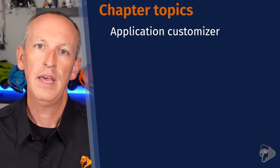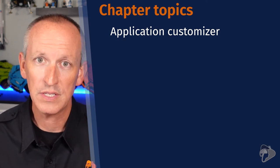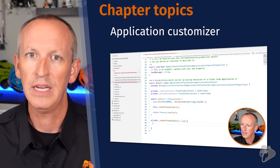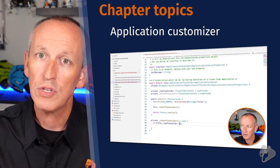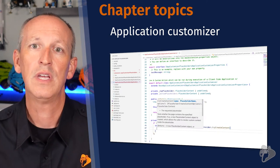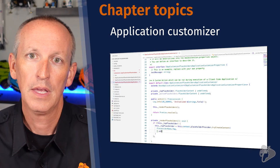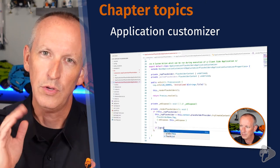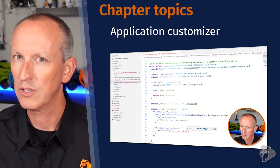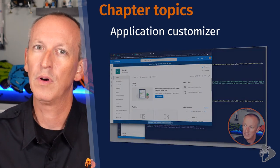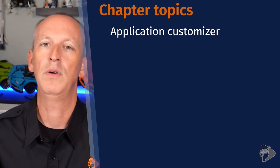The first and probably most common type of extension is an application customizer. The app customizer can be deployed to all pages in a site or across an entire tenant. It allows you to run JavaScript on every page in the site or in the entire tenant, and you can also use it to add a content placeholder pinned either to the top of the page in the header or in the footer of pages in the same scope. Seasoned SharePoint developers may remember delegate controls and script link controls — the application customizer extension is the modern page answer to those classic mode extensibility options.